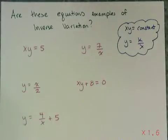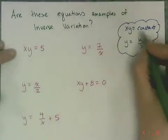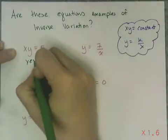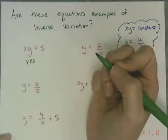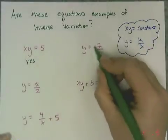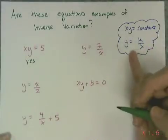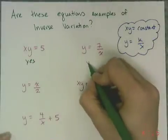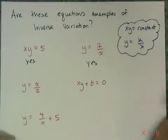Looking at the first example, xy equals 5 — this is of the first form, so yes, it is an inversely proportional relationship and the constant is 5. The second example, y equals 7 divided by x, is of the second form. So yes, this one is also an inversely proportional relationship or an inverse variation.